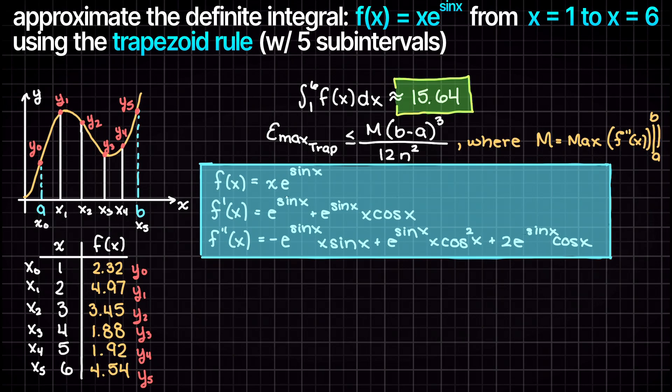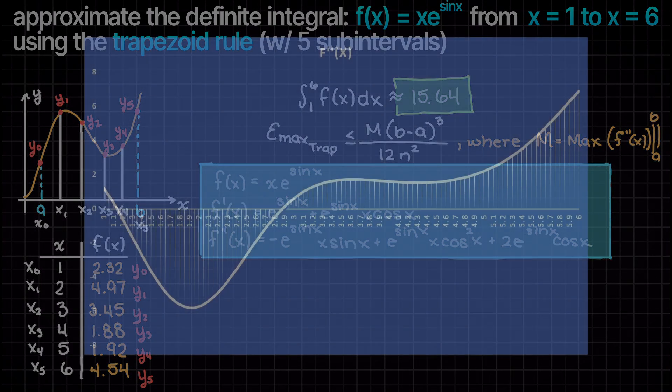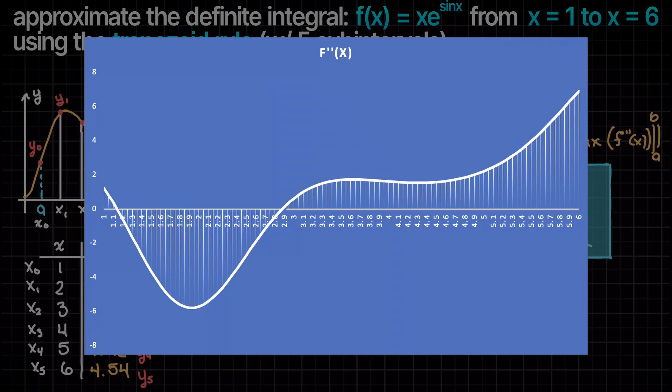I'm going to graph this second derivative in Excel to see roughly where our second derivative reaches a maximum absolute value. This is an input of 6 where the second derivative reaches 6.903.